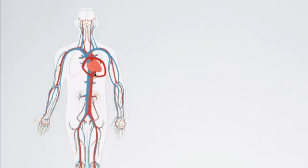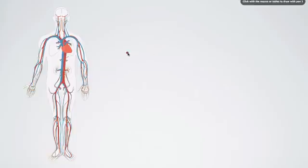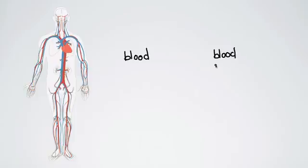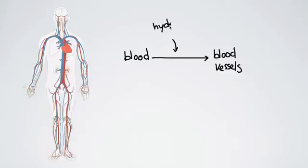We've spoken about that in previous episodes. Now, today we want to talk about blood pressure. I'm going to define blood pressure simply. Here we have the blood and over here we have blood vessels. As the heart is beating and sending that blood out to the body via these blood vessels, because it's being pumped, that is going to exert a pressure on the blood vessels. We're going to call this pressure a hydrostatic pressure. The reason we call it hydrostatic pressure is because blood is a fluid, and when fluids exert pressure on something, that's called hydrostatic pressure.